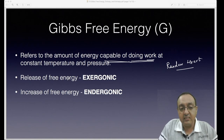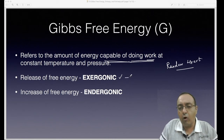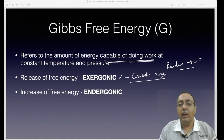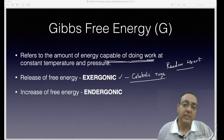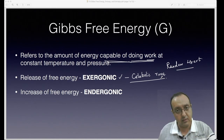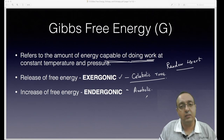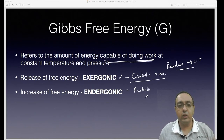When a reaction releases free energy, it is called an exergonic reaction — most catabolic reactions are exergonic. Reactions that require energy input from the surroundings — increasing the free energy of the system — are called endergonic reactions. Examples include anabolic reactions such as DNA synthesis, RNA synthesis, starch synthesis, and cellulose synthesis.